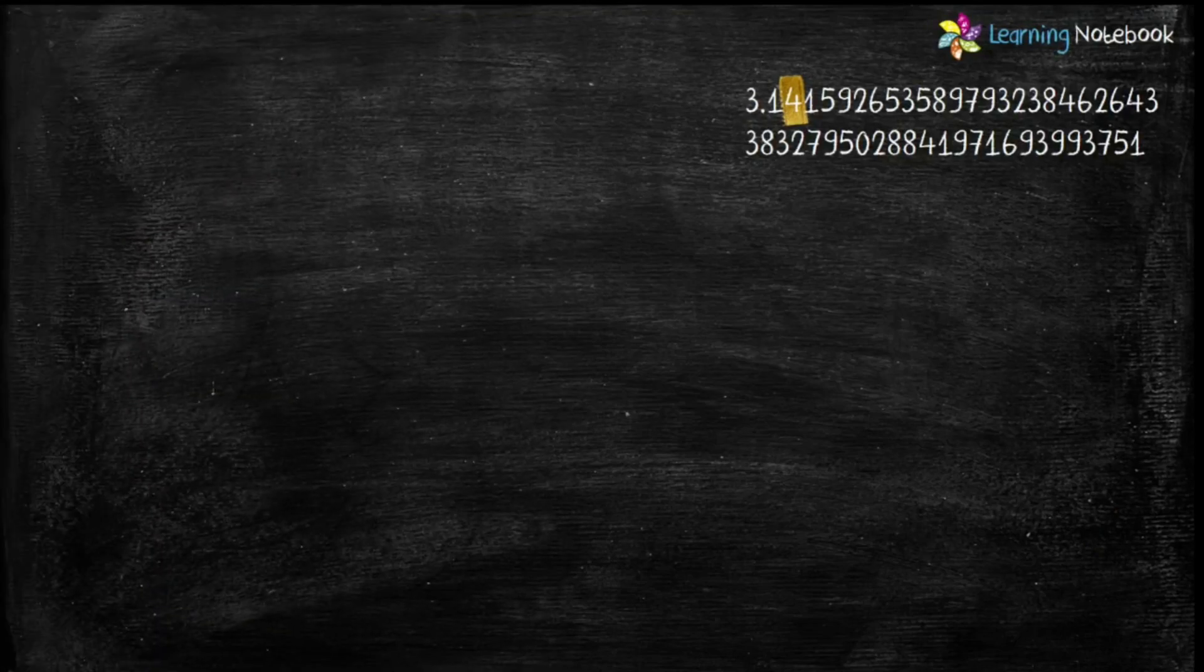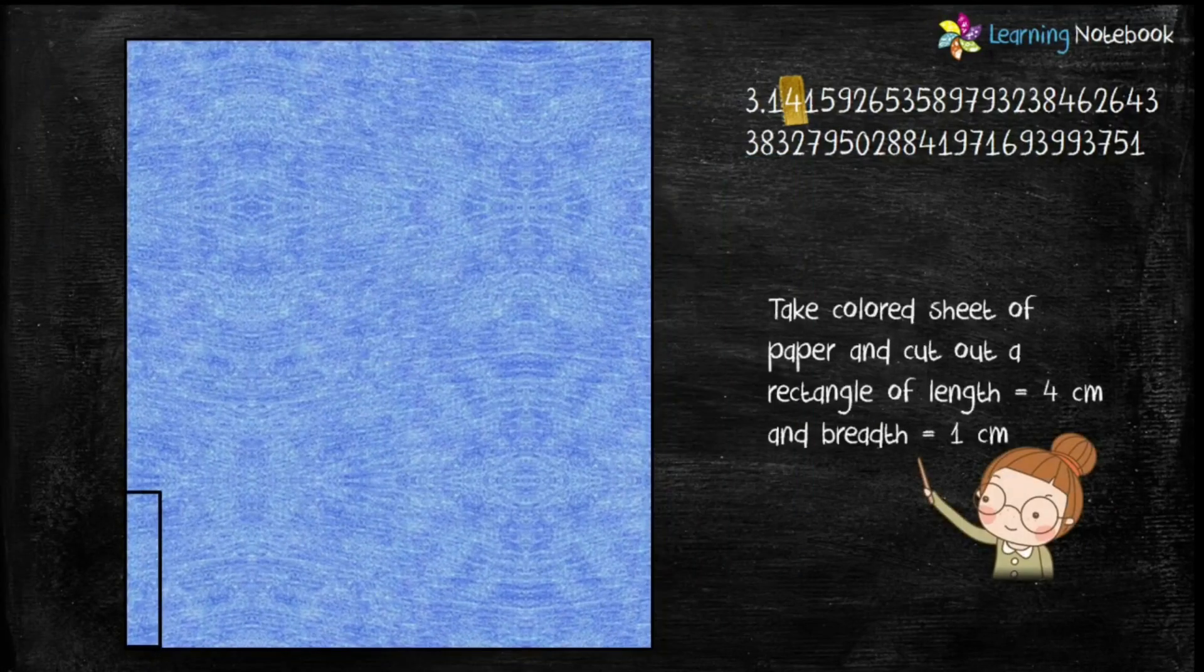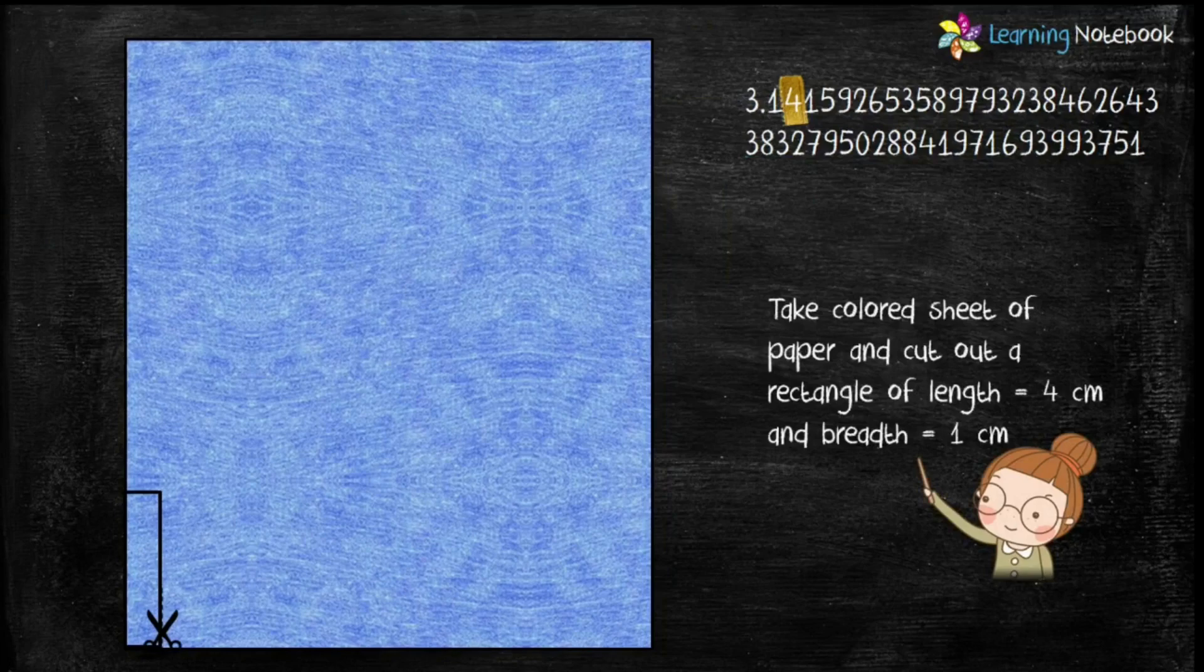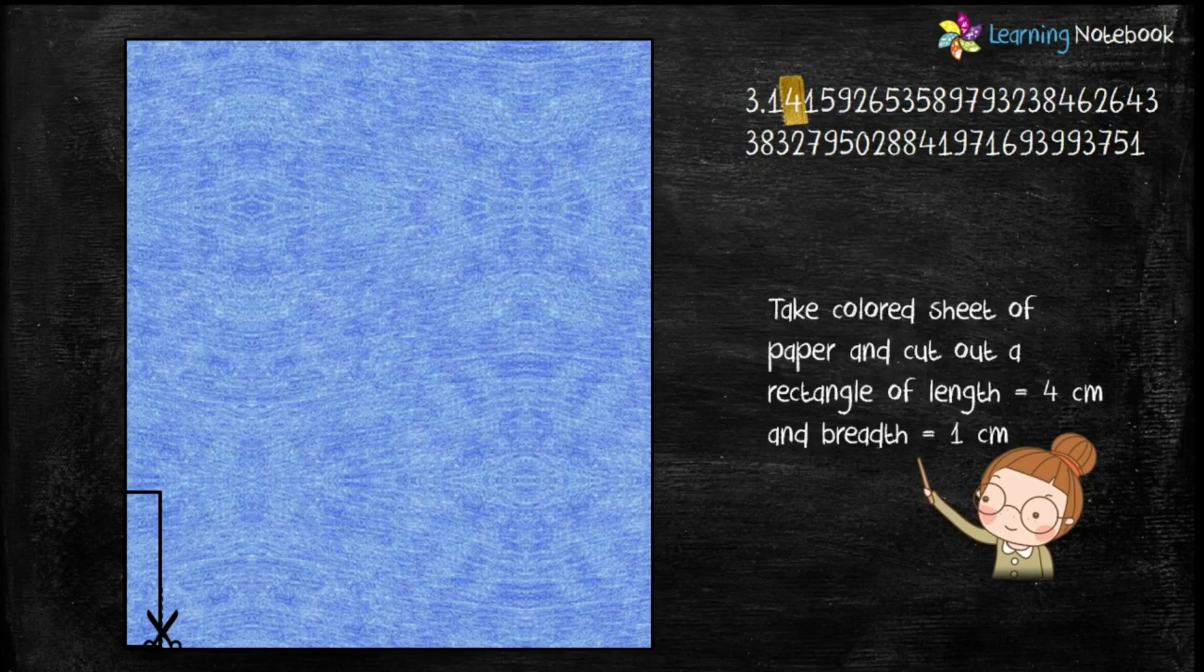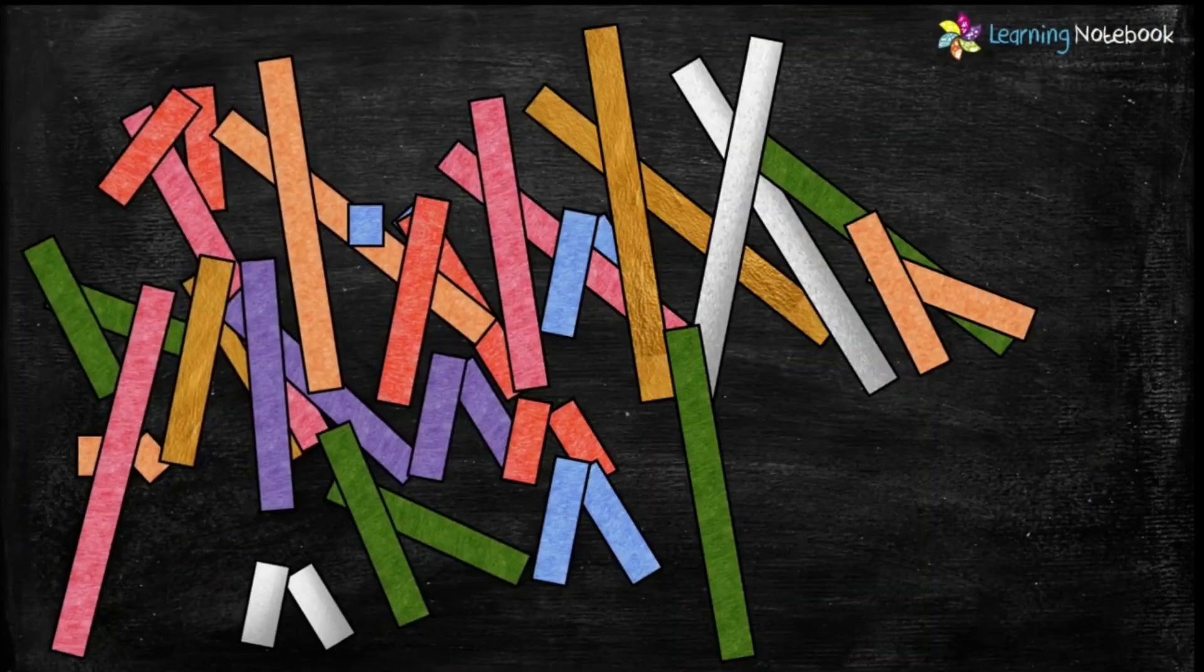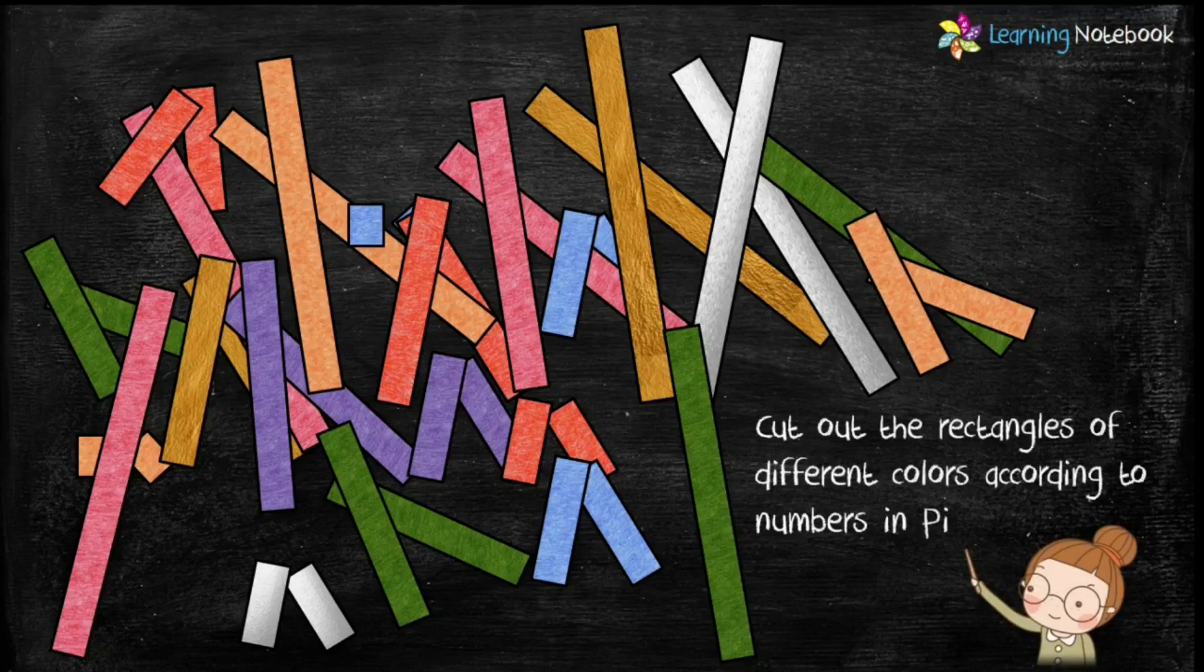Next digit is 4, so cut out a rectangle of length 4 centimeters and breadth 1 centimeter on another colored sheet of paper. Students, in the same way cut out more rectangles of different colors according to the numbers given in the value of pi.